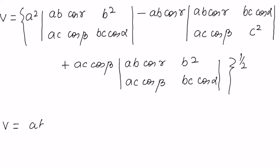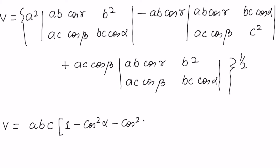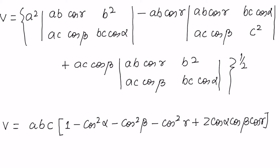You will see that the volume equals abc times a factor which depends only on the angles. That factor is the square root of: 1 − cos²α − cos²β − cos²γ + 2·cosα·cosβ·cosγ. This is the square root of this whole expression, giving the most general formula for the volume of the unit cell.